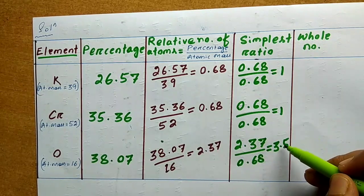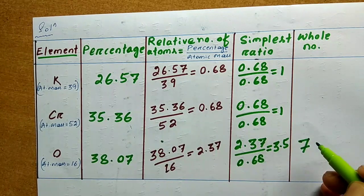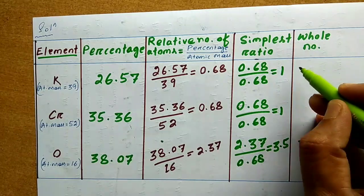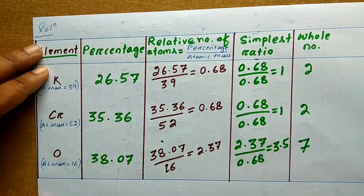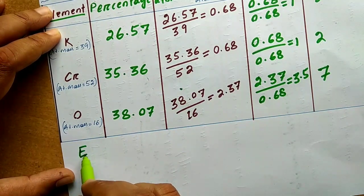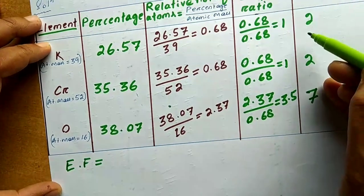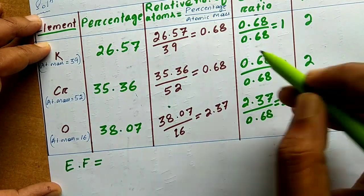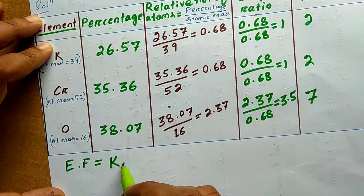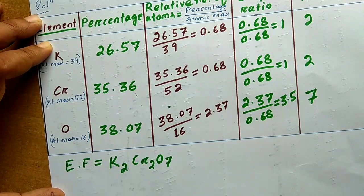So 3.5 can be converted to a whole number by multiplying by 2, giving 7. Since we multiply 2 here, we have to multiply all other values by 2 as well, so they become 2 and 2. Now we can write the empirical formula. The ratio is K2, Cr2, O7.